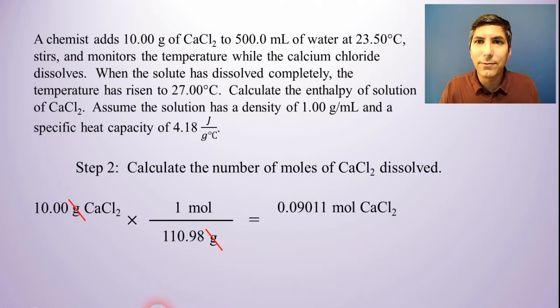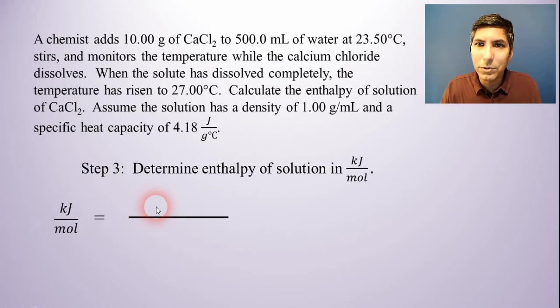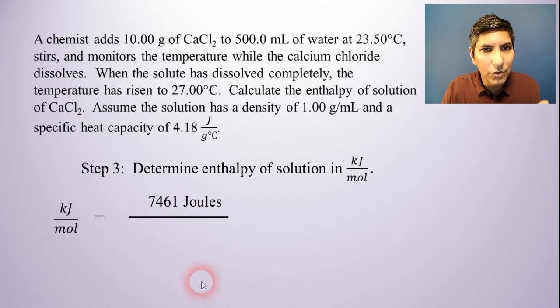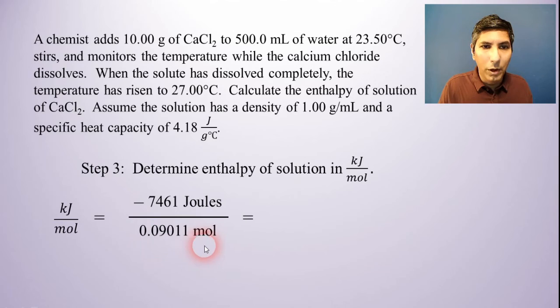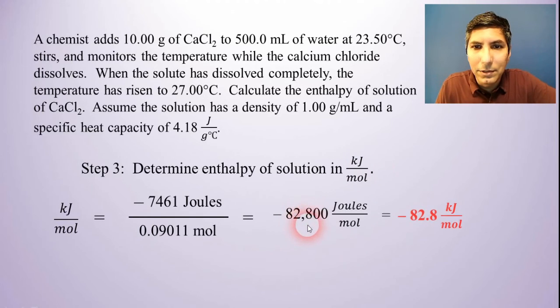So now all I have to do is find kilojoules per mole. That implies kilojoules divided by moles. In our first step, we found out that the joules were 7461. I'm going to do a little sign change here because I'm realizing that this is an exothermic process. Since the temperature goes up, it's exothermic, so I'm going to put a negative sign to signify that I know the delta H is going to be a negative value for exothermic. Moles, we got that in step two, 0.09011 moles. When you divide this out, I get -82,800 joules per mole. Now the question is, enthalpy of solution, we normally put that in kilojoules per mole. So I divide this by 1000 and this becomes -82.8 kilojoules per mole.